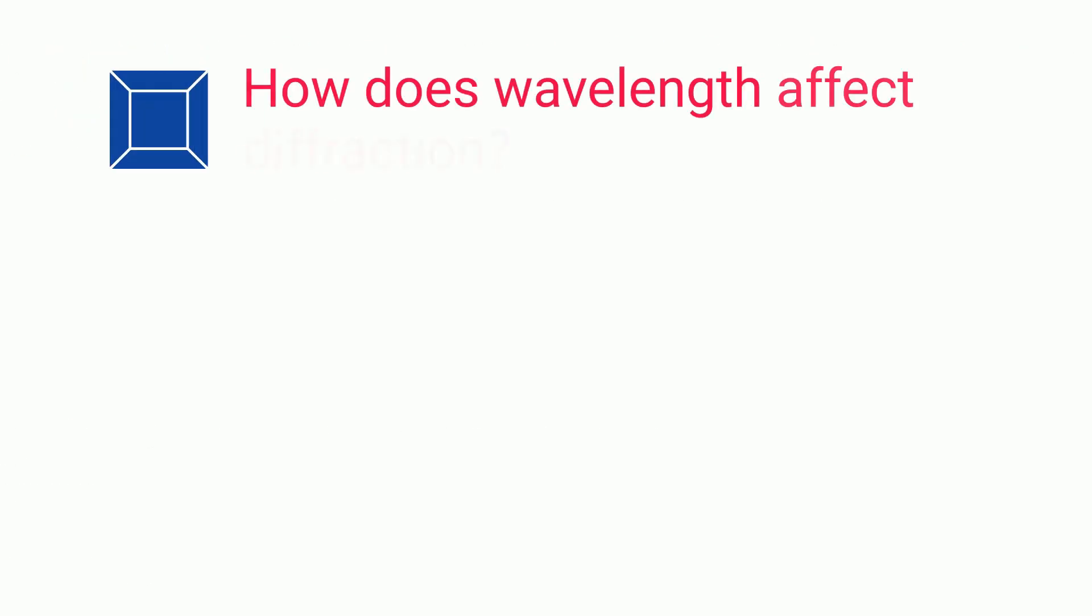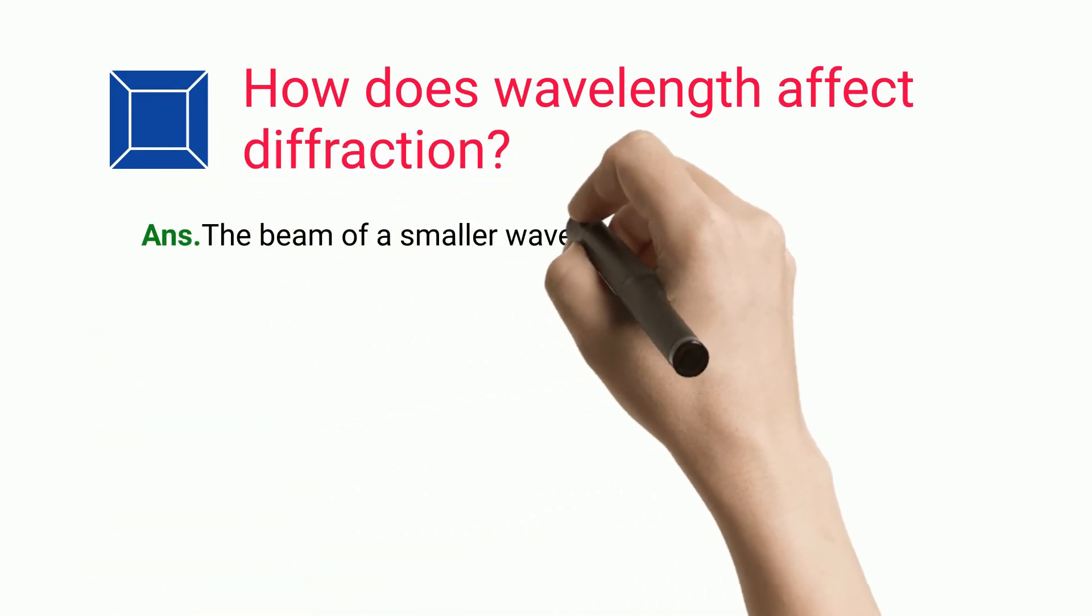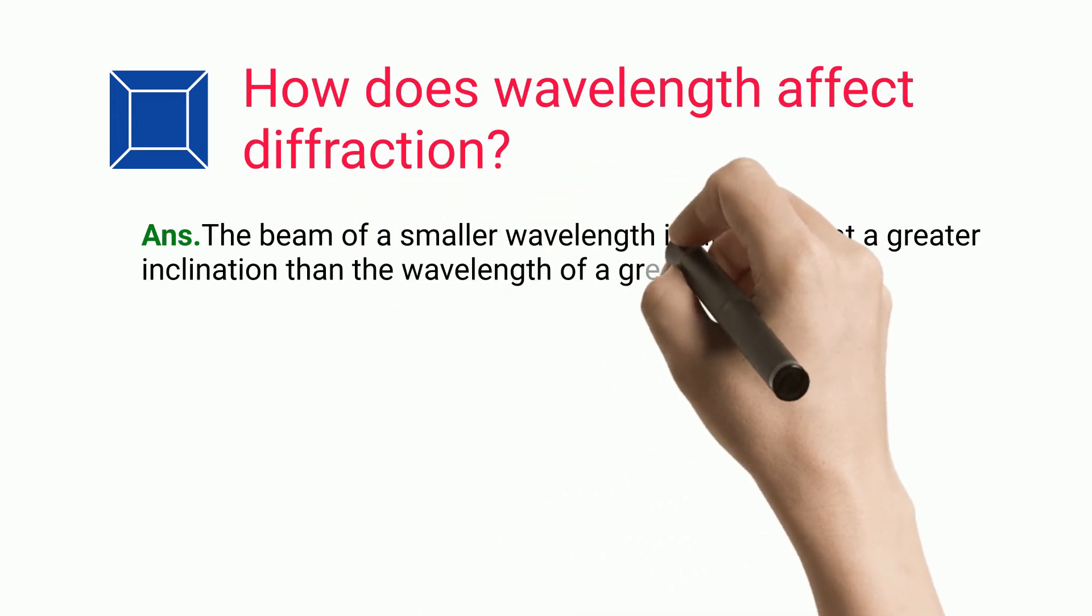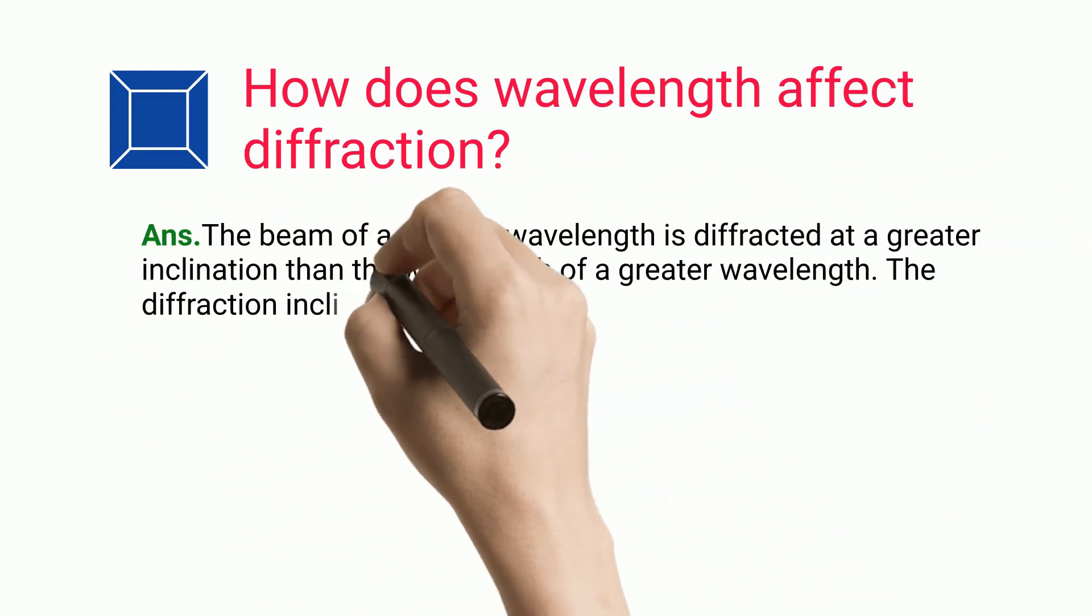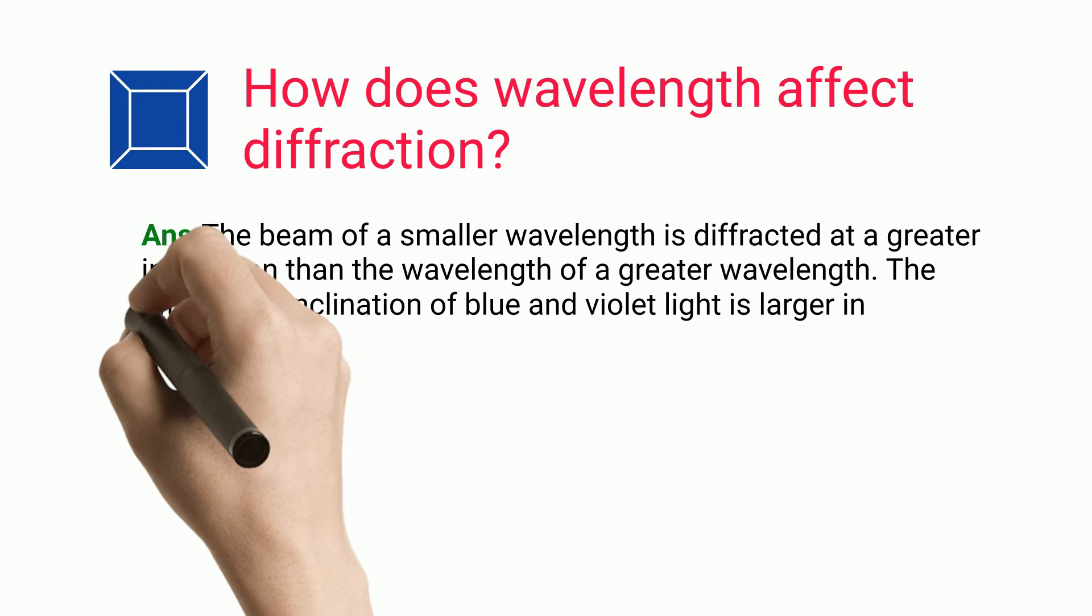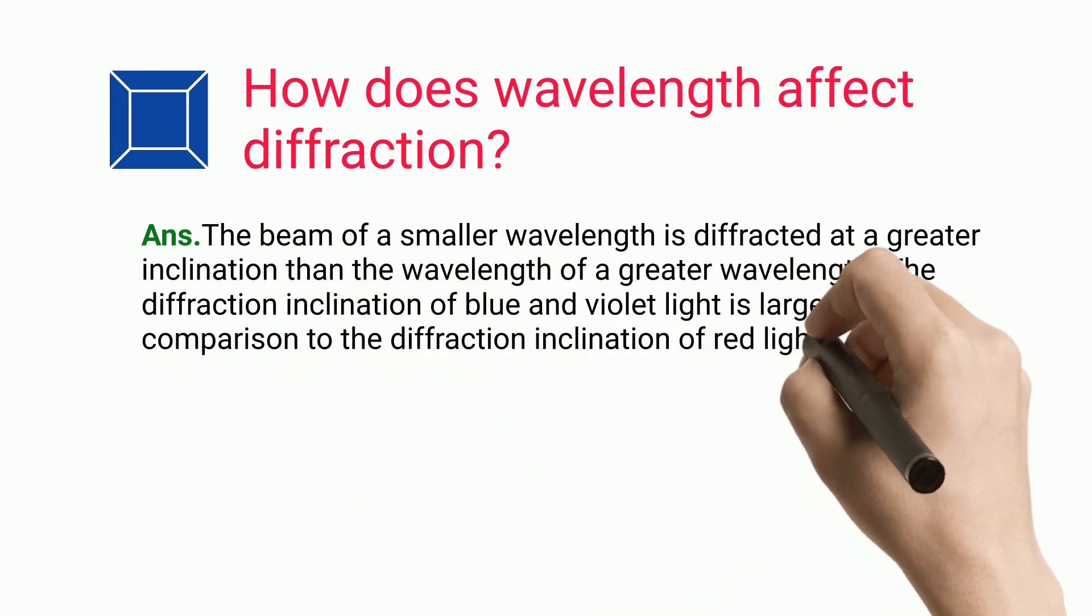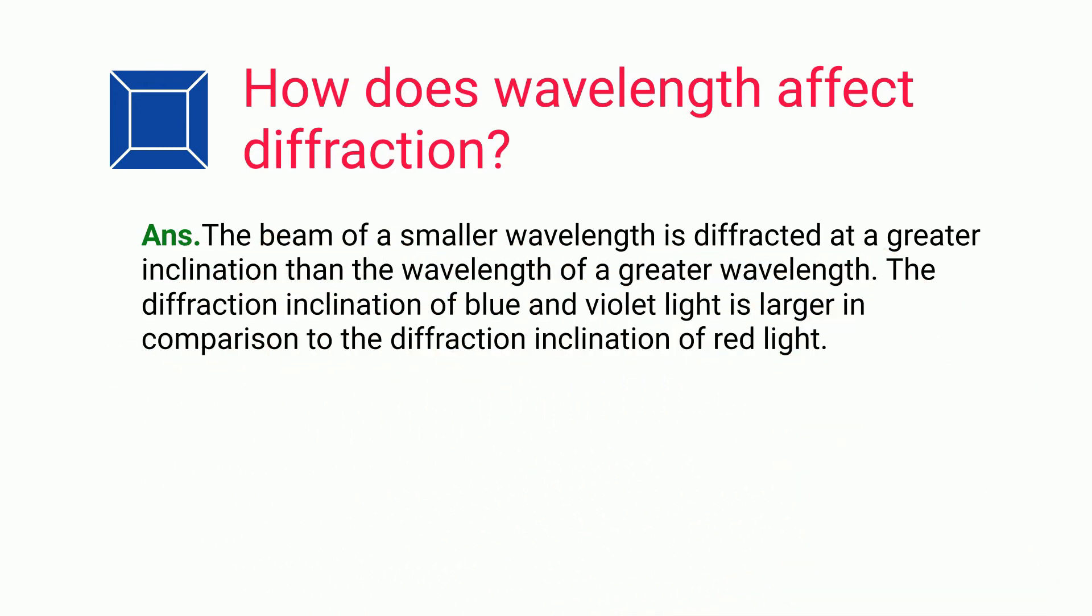How does wavelength affect diffraction? The beam of a smaller wavelength is diffracted at a greater inclination than the wavelength of a greater wavelength. The diffraction inclination of blue and violet light is larger in comparison to the diffraction inclination of red light.